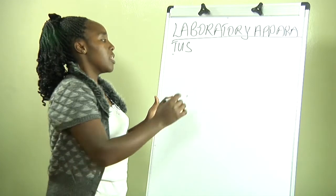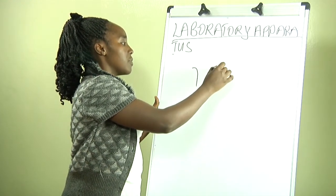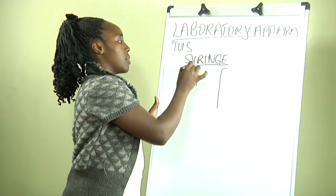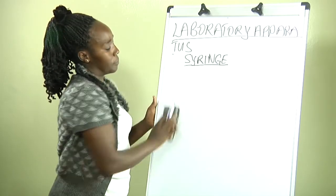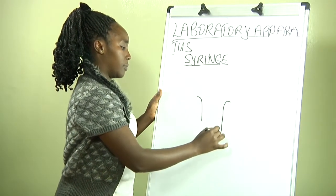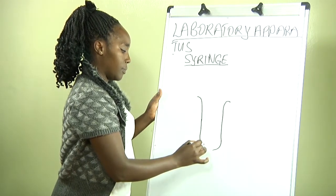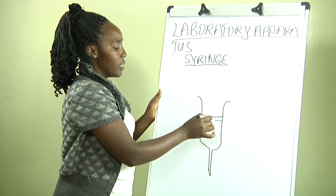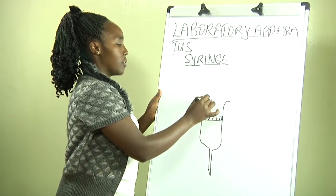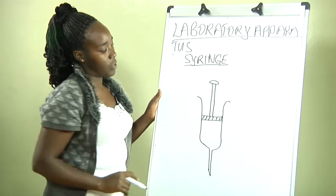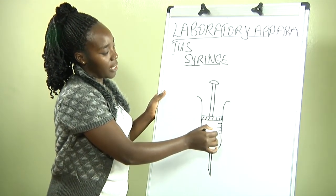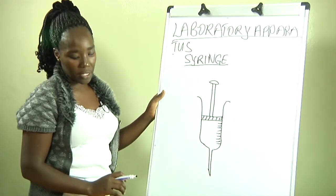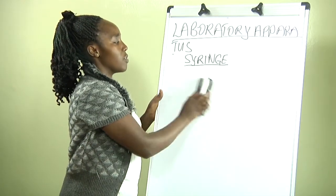We also have another apparatus used to get very accurate volumes of a liquid, and we call it a syringe. A syringe — we have seen it in hospitals; it is the one mainly used by doctors for injections. It has a piston to push in the volume of the liquid. It is calibrated for us to know exactly what volumes of liquid we are delivering to the next container. It is also used to fairly give us the actual volume of a liquid in the laboratory.